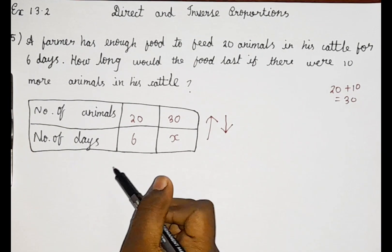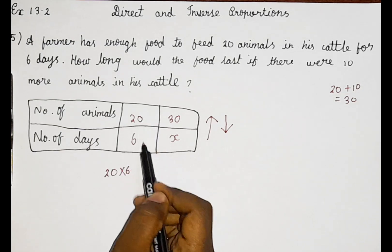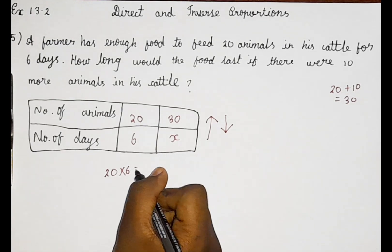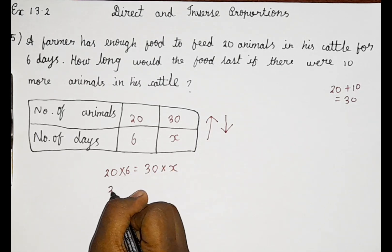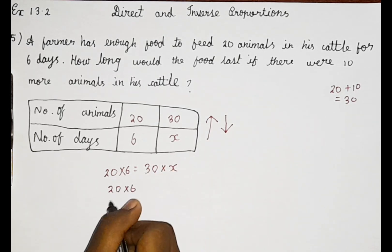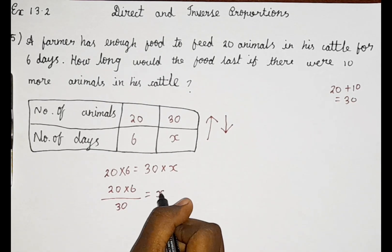We shall use the inverse proportion formula, that is 20 into 6. It is compulsory to multiply both; this equals 30 into x. So 20 into 6 by 30 equals x.